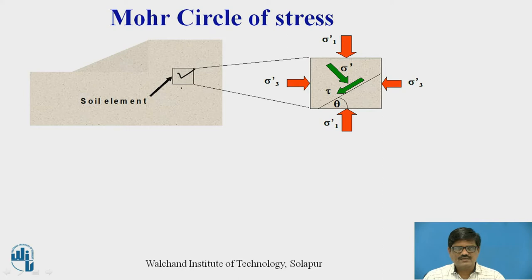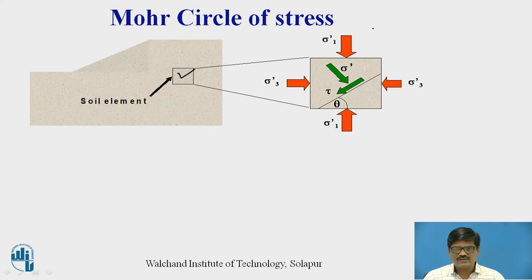If I consider a small soil element present in a soil mass, then there exists a certain stress system on this soil element. In the enlarged view on the right-hand side, the soil element is subjected to two principal stresses: along the horizontal axis, the minor principal stress sigma 3, and along the vertical axis, the major principal stress sigma 1. On any generally inclined plane, we can find the normal stress and shear stress.